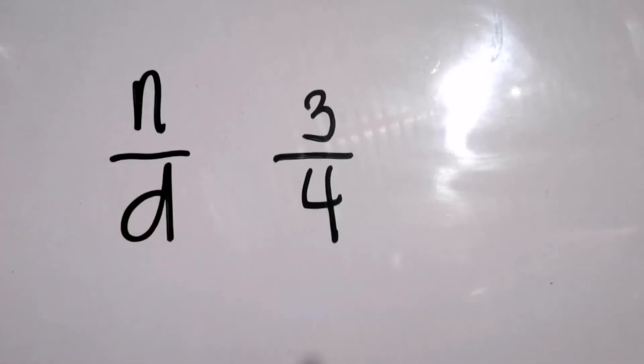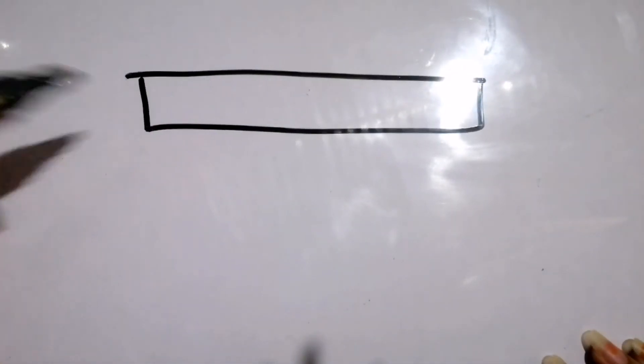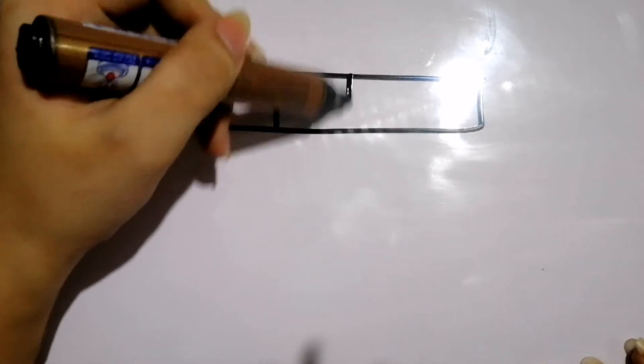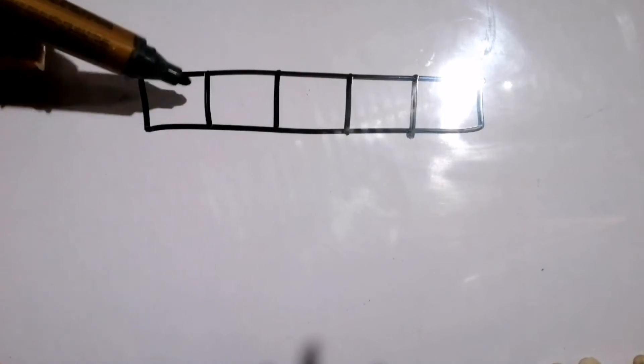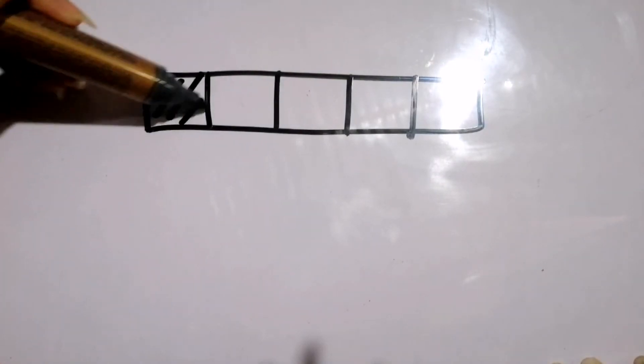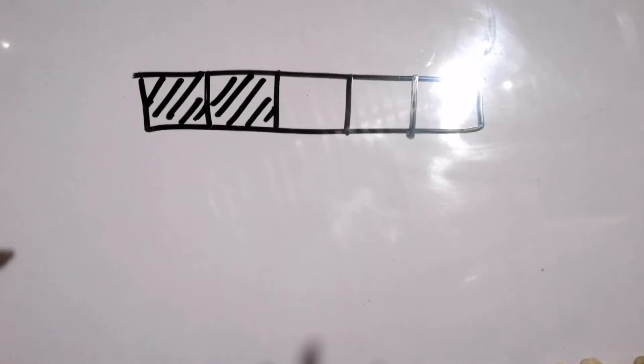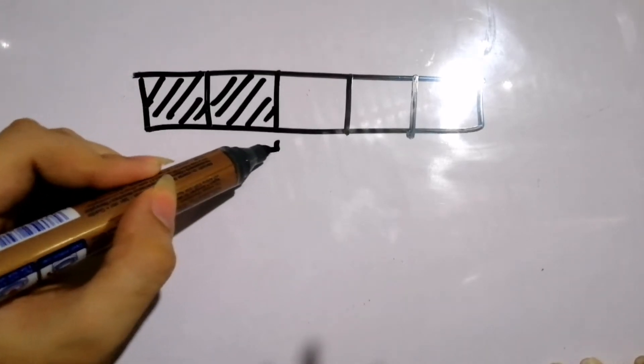Now let's have more examples of fractions. This time let's consider this piece of wood. Imagine you cut it into five equal parts. Now after cutting it into five equal parts, you took two parts of it.